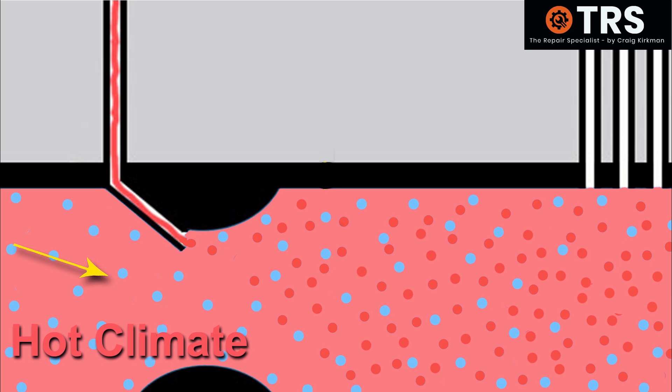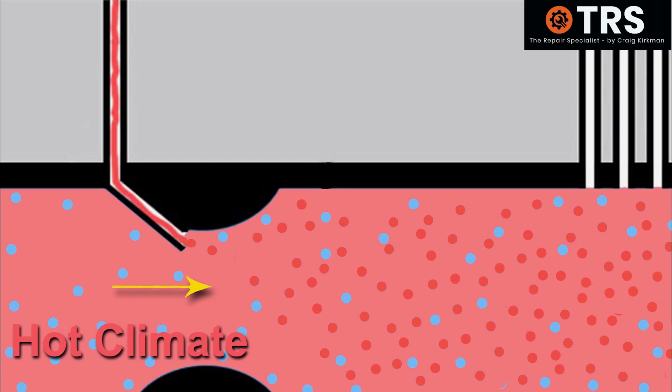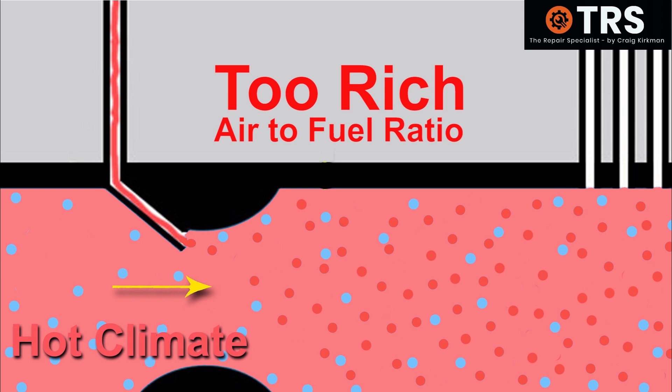Now, the level of air molecules coming into the engine would, of course, reduce the efficiency of the engine and slow the engine down anyway, and that would bring out less fuel. But it would still be an air-to-fuel mixture that's too rich for the engine.